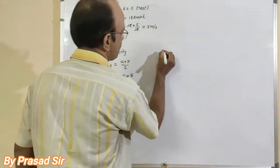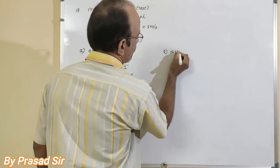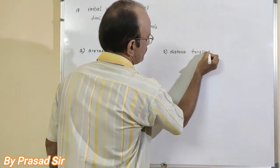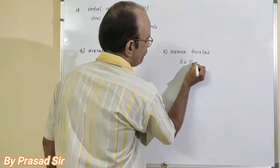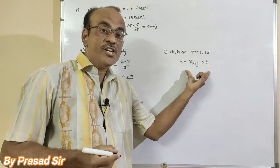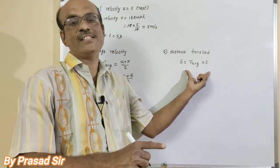That is (b). So here distance traveled: s is equal to v average into t. This equation we will use in the derivation of second equation, that is s equal to ut plus